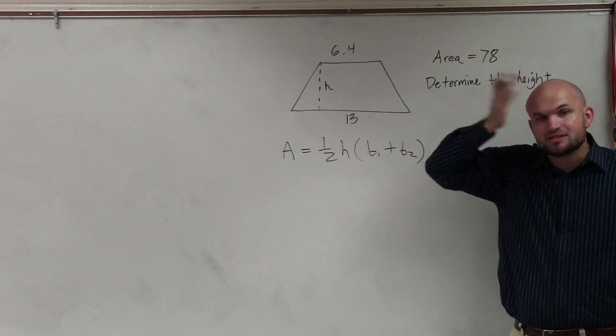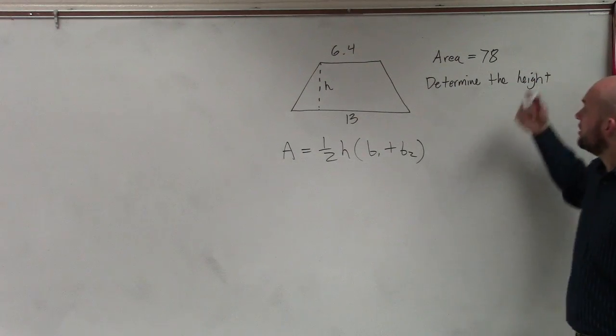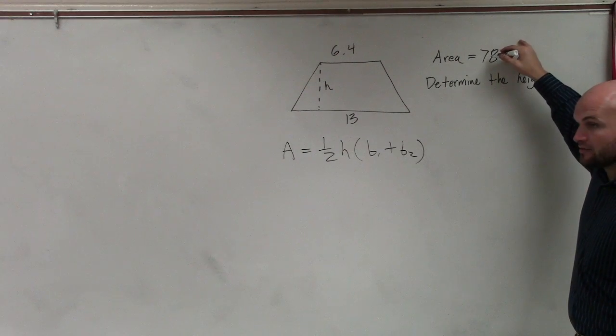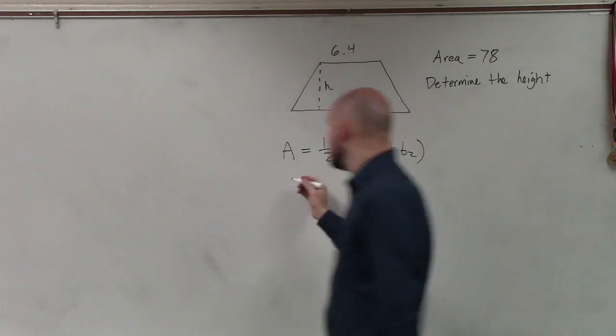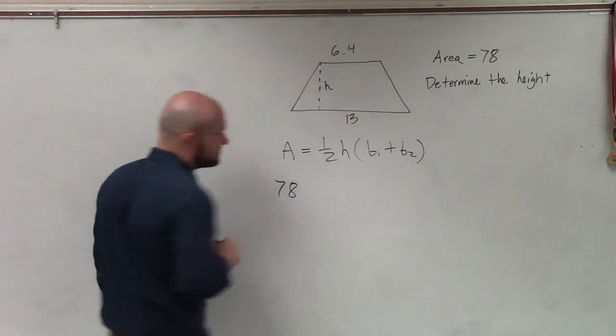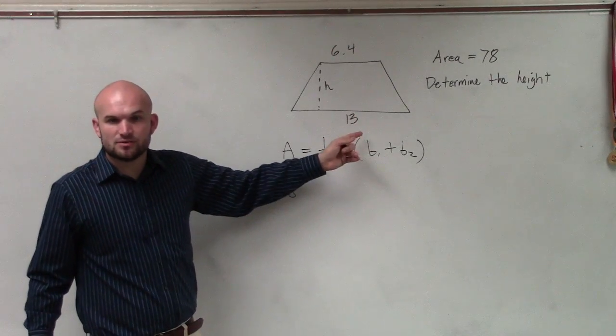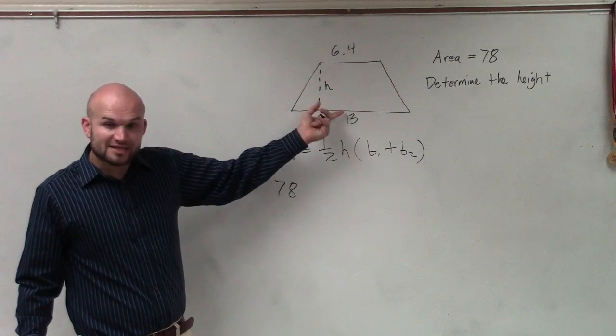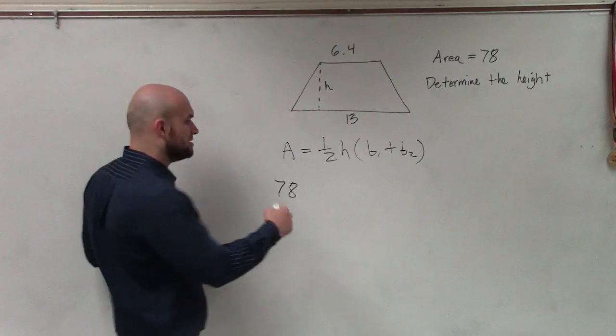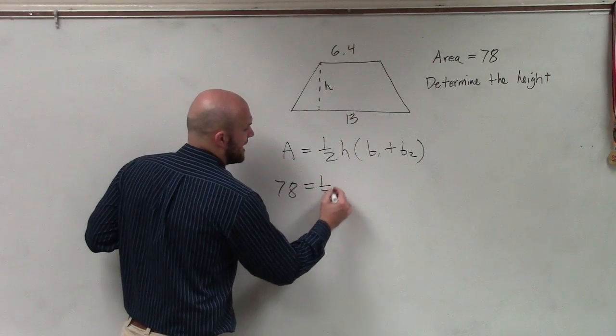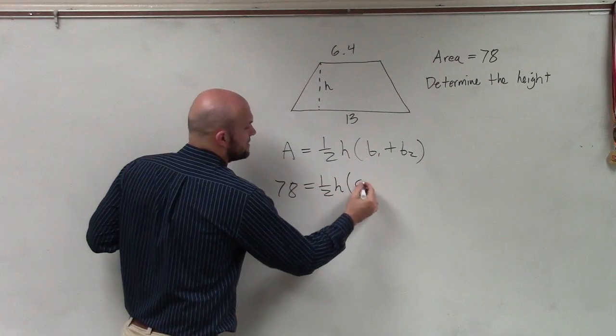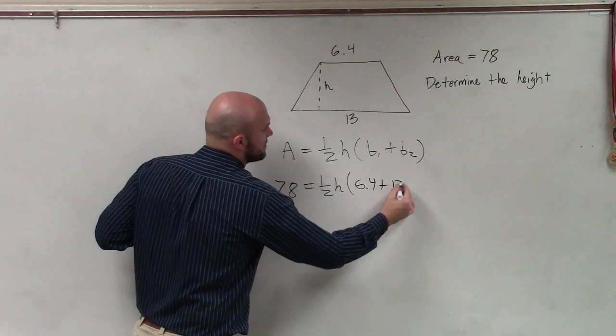Now let's determine what we have. In this problem, they give us the area, so A is 78. They give us base 1 and base 2. The only thing we don't know is h, which represents our height. Let's plug all of those in: 78 equals one-half times h times 6.4 plus 13.